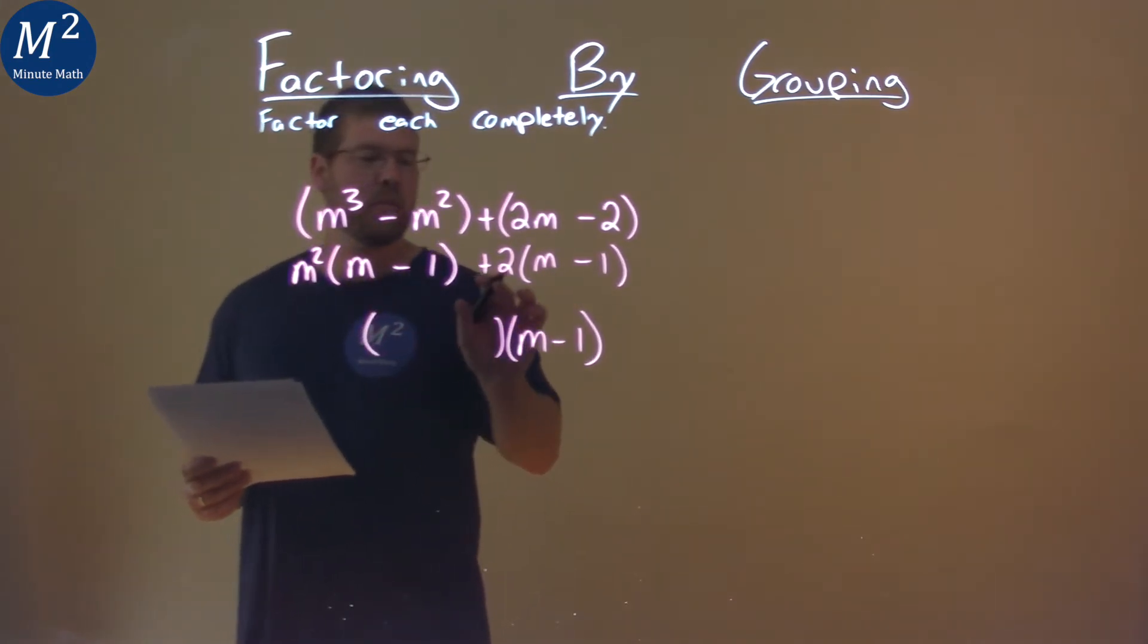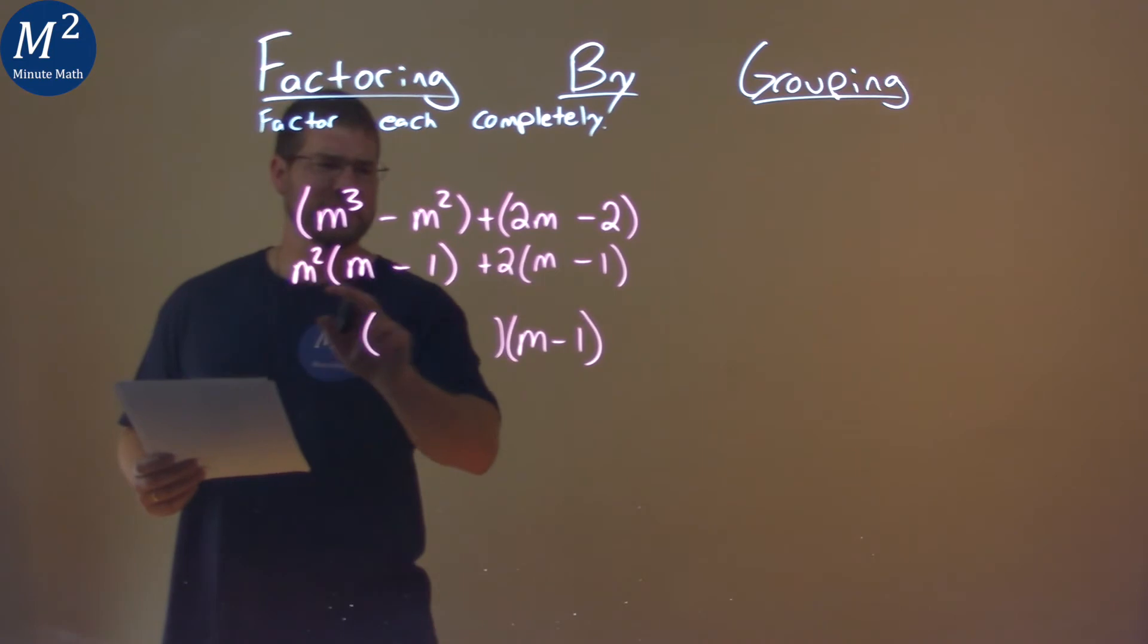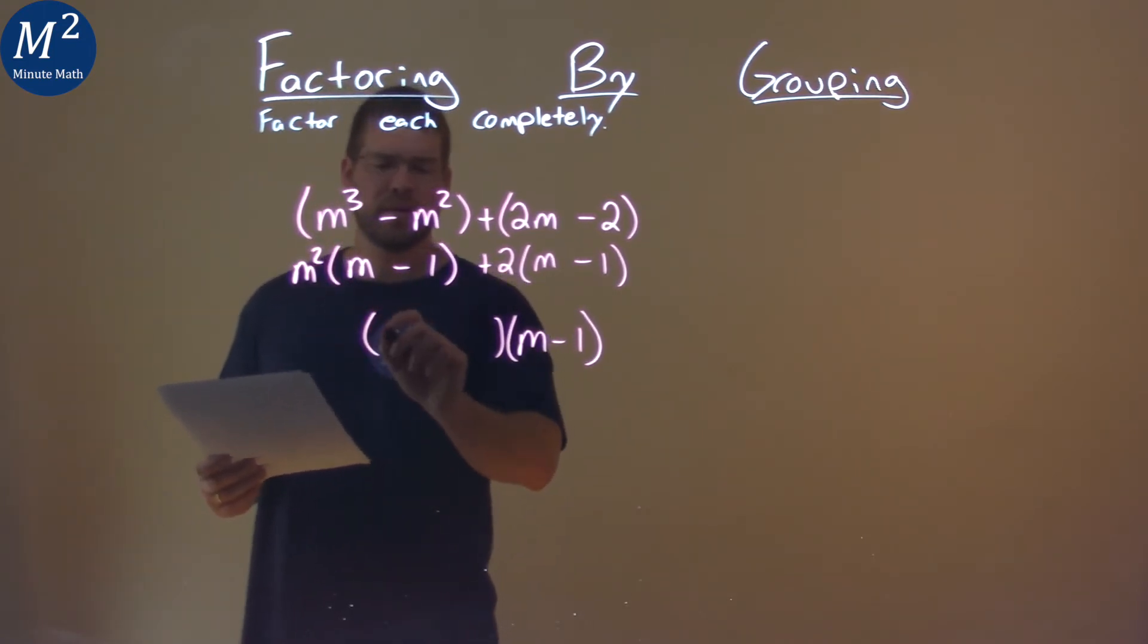we're left with the leading coefficients there for each one, or what it's being multiplied. The m squared plus 2. See how that's coming down here.